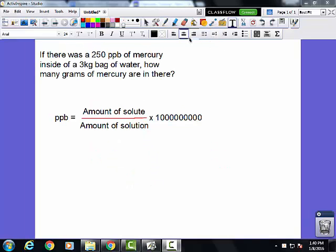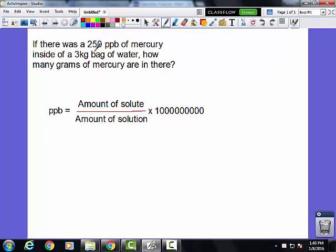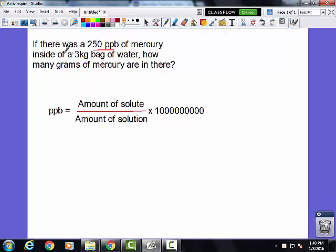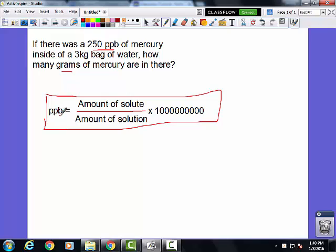Let's do another slightly more challenging concentration question. This one is asking about parts per billion of mercury inside of a 3 kilogram bag, and then it asks how many grams of mercury there are. The equation for parts per billion is slightly modified. The difference is it's parts per billion instead of parts per million, and you've got to add three more zeros there because we're looking at billions, not millions.